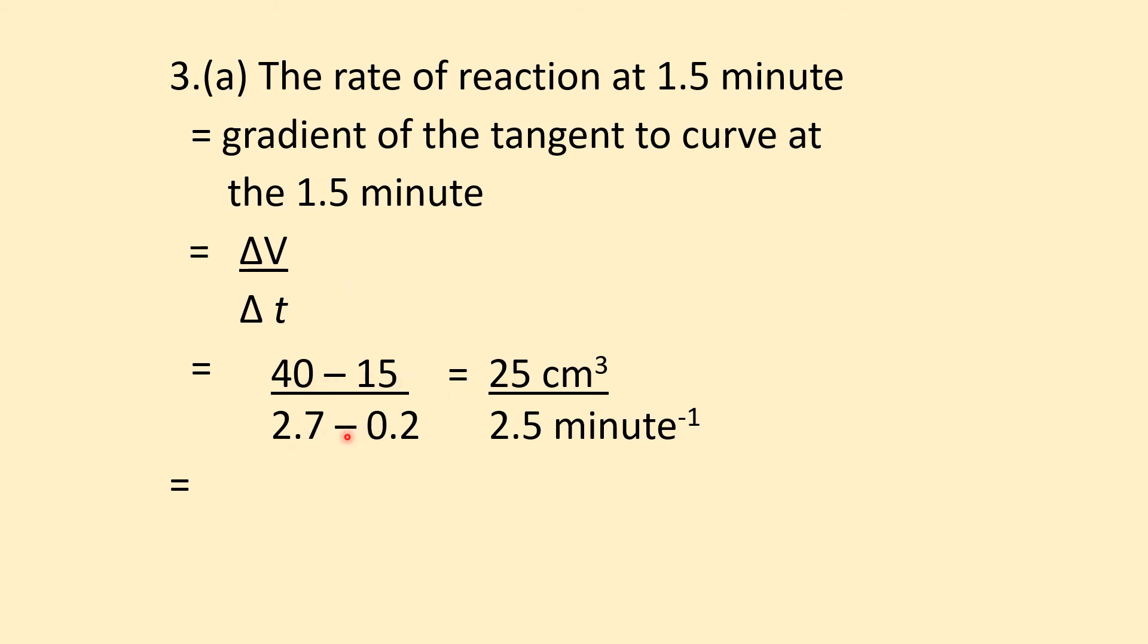From my readings: (40-15)/(2.7-0.2) = 25/2.5 = 10 cm³ per minute. In the exam, there's an acceptable range - if you get 10.3 or 10.5, it's still accepted. Don't worry, these tangent questions always have a range for the answer.